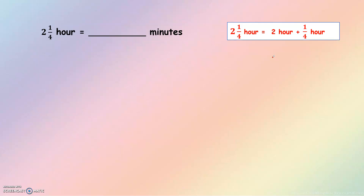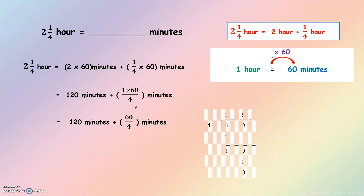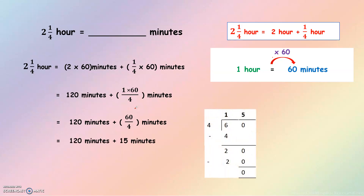The next example: separate 2 and 1 over 4 into 2 hours plus 1 over 4 hour. Write the formula and multiply by 60: 2 times 60 equals 120 minutes. Plus 1 over 4 times 60: 60 divided by 4 equals 15. The answer is 135 minutes.